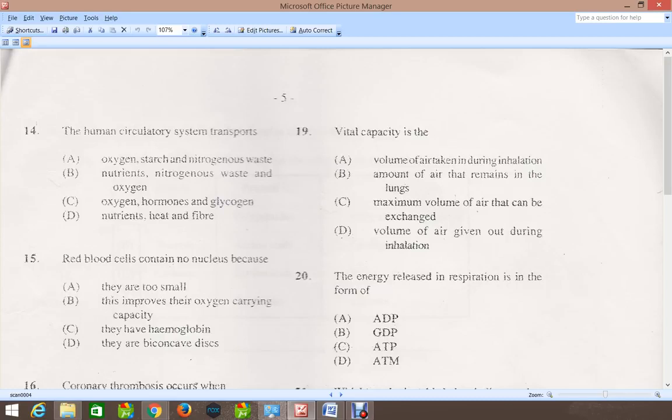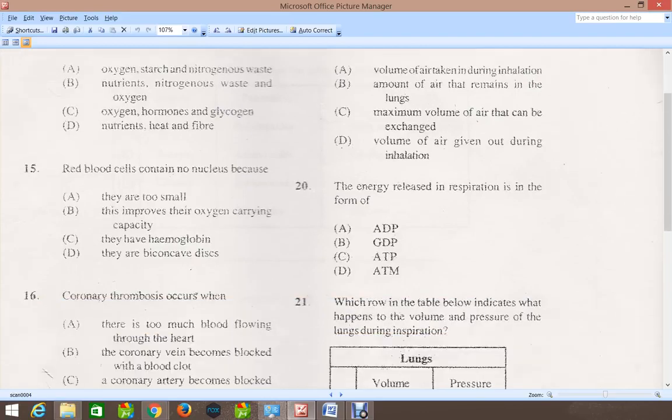Question 19: Vital capacity is, the correct answer is C, maximum volume of air that can be exchanged. That is the correct answer.